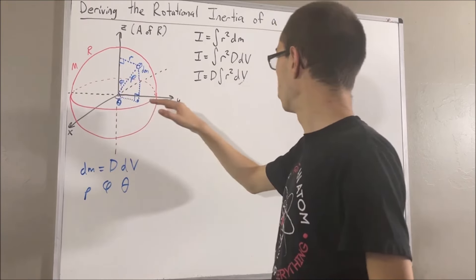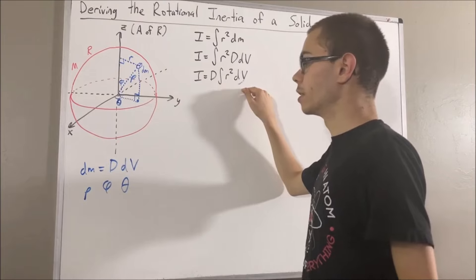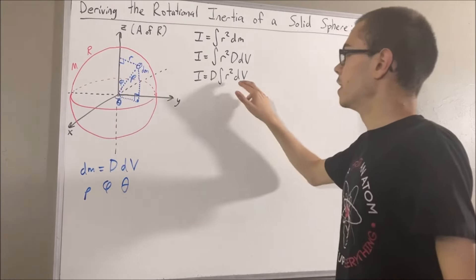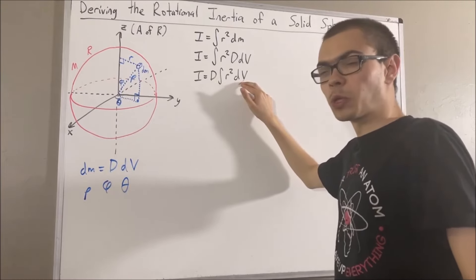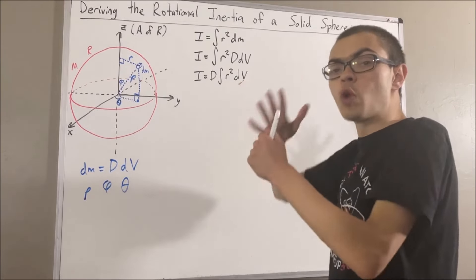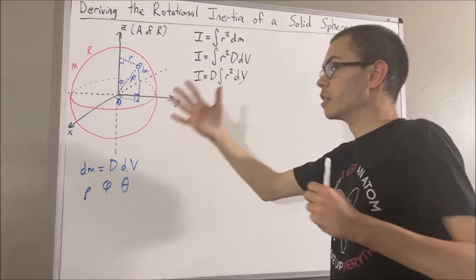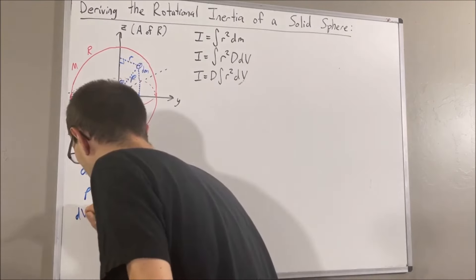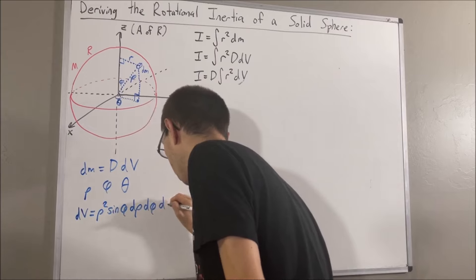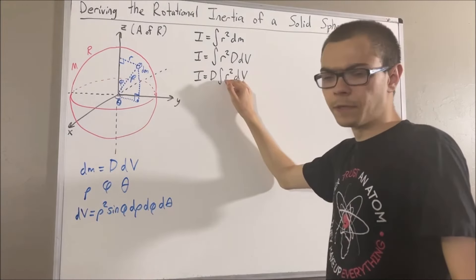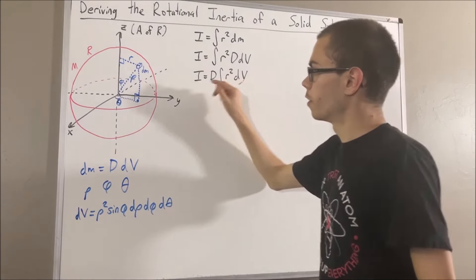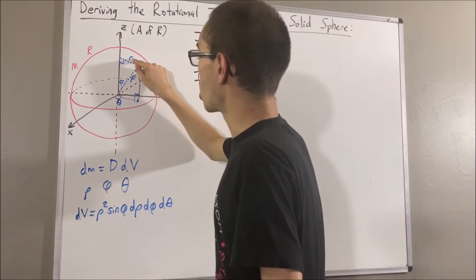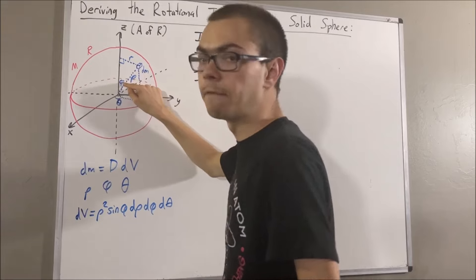Now we're going to convert our integral into spherical coordinates. If you recall, differential volume in spherical coordinates is given by rho squared sine phi, d rho, d phi, d theta. And what is R in spherical coordinates? Looking at the right triangle, we can observe that R is equal to rho sine phi.